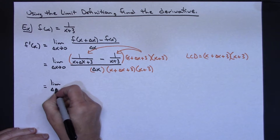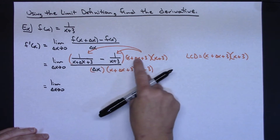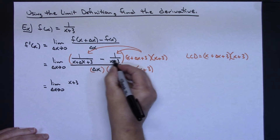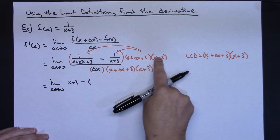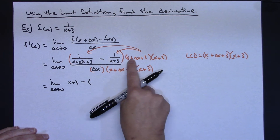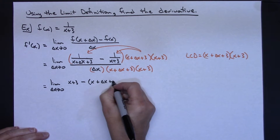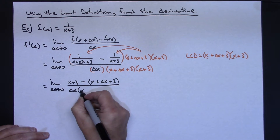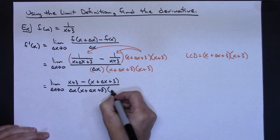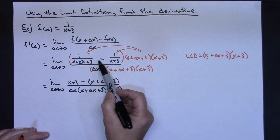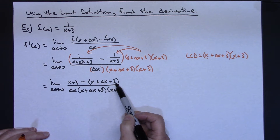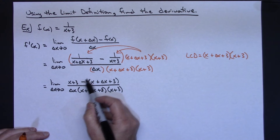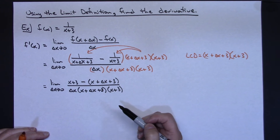In my next line: the limit as delta x approaches 0. When I distribute the LCD to the first fraction, x plus delta x plus 3 cancels, leaving x plus 3. Minus — and I put parentheses around this — when I distribute to the second fraction, x plus 3 cancels, leaving x plus delta x plus 3. All over the denominator: delta x, times x plus delta x plus 3, times x plus 3. The parentheses are important because I'm subtracting that entire quantity.